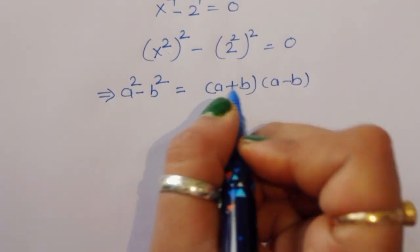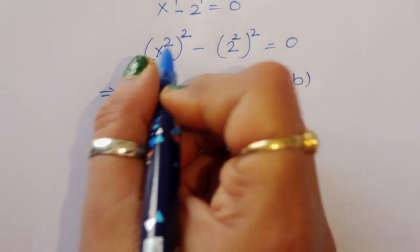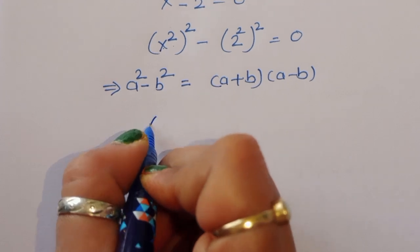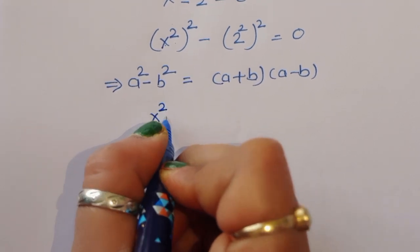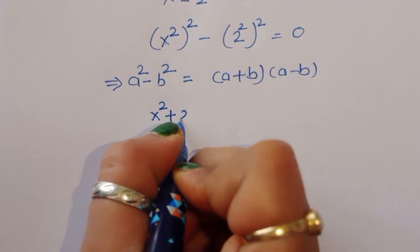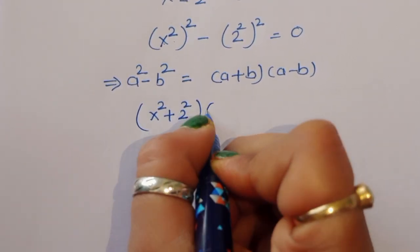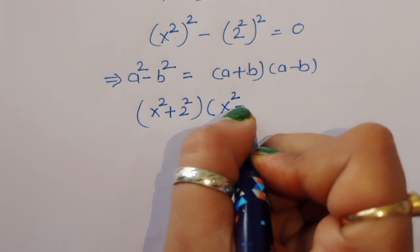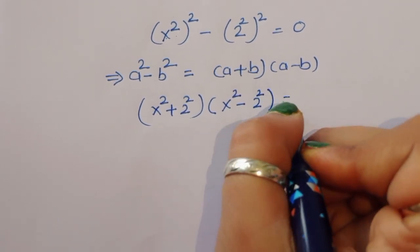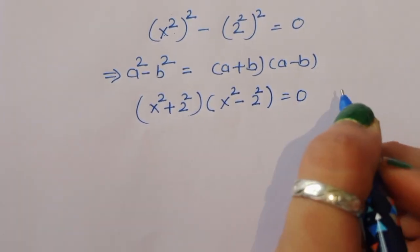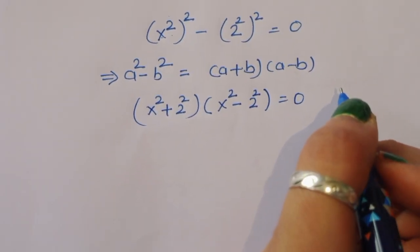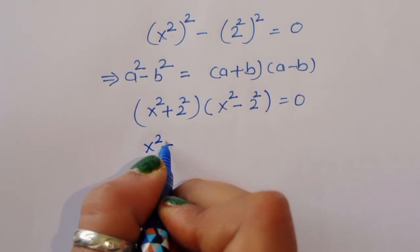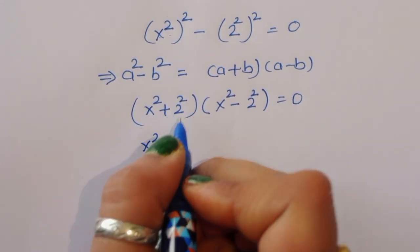Using this formula with a = x² and b = 2², we get (x² + 2²)(x² - 2²) = 0, which is (x² + 4)(x² - 4) = 0.